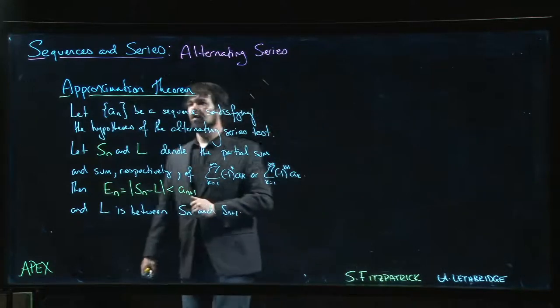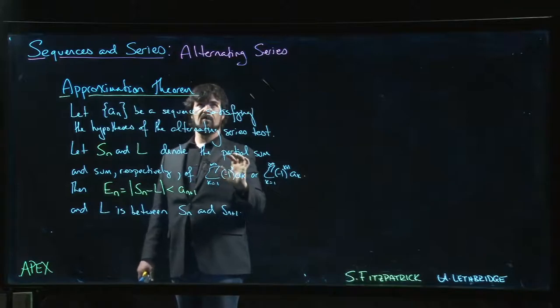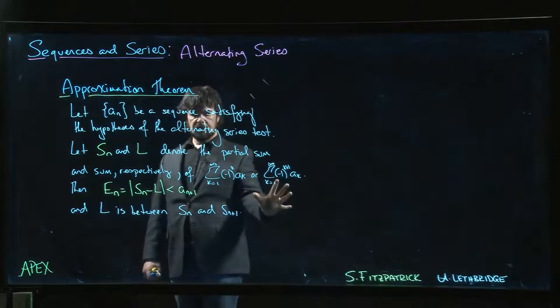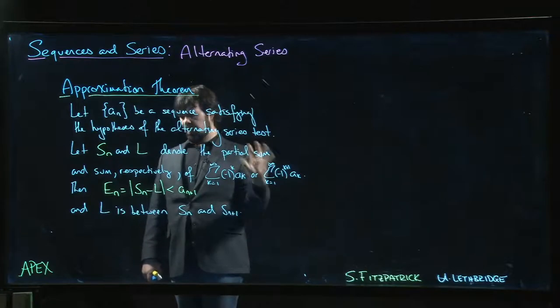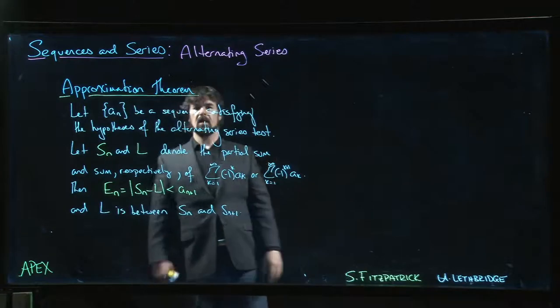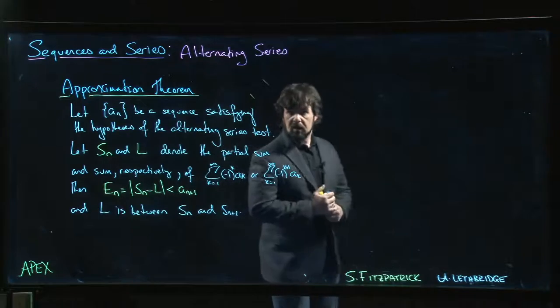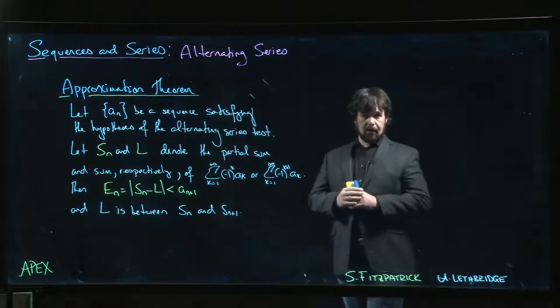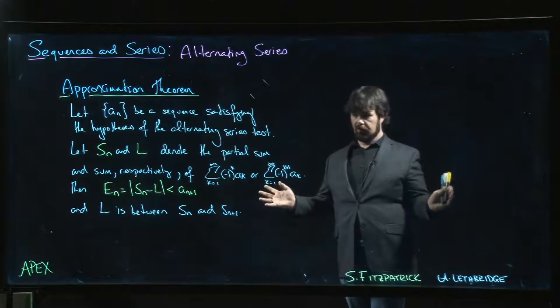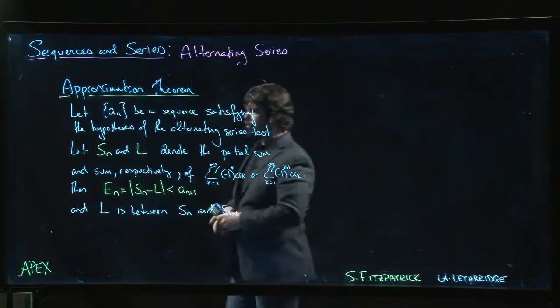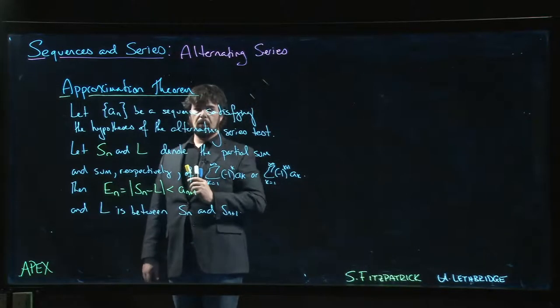The next result we want to talk about is the approximation theorem for alternating series. The theorem is a bit of a mouthful, but the idea is pretty simple. You can actually approximate an alternating series pretty well by any of its partial sums. Remember that to satisfy the hypotheses of the alternating series test...